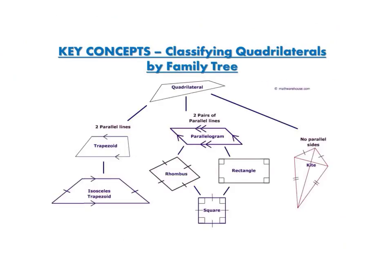Now we're going to look at classifying quadrilaterals by family tree. At the top, all four-sided polygons are quadrilaterals. A quadrilateral can sometimes be a trapezoid, sometimes a parallelogram, and sometimes a kite — so there are three kinds of quadrilaterals at that level. Under trapezoids, a trapezoid can either be a plain trapezoid or an isosceles trapezoid, which has two non-parallel sides of the same length. A kite is just a kite, with adjacent sides being the same length.